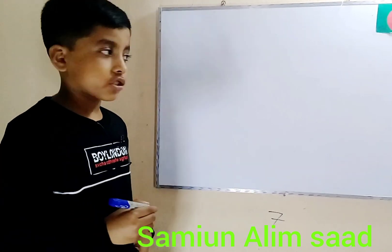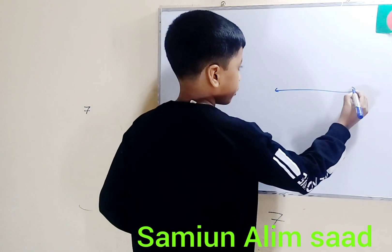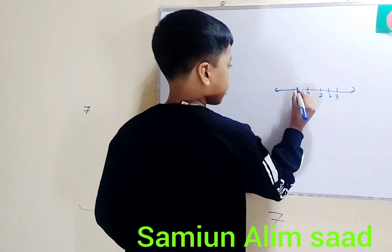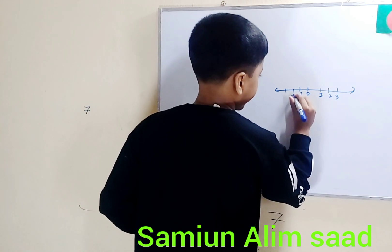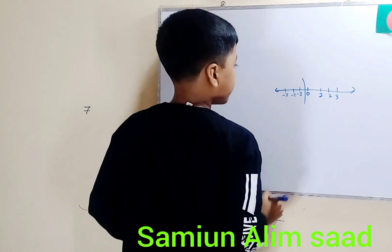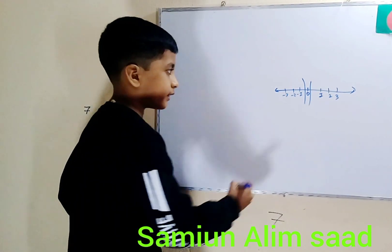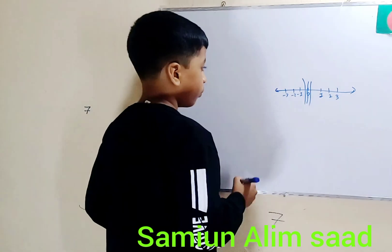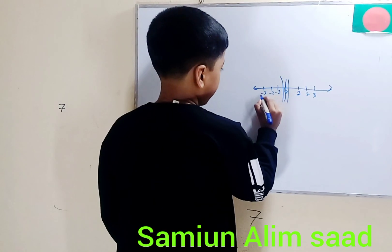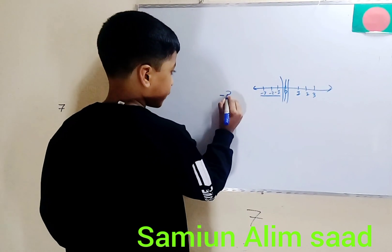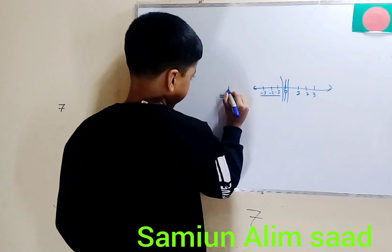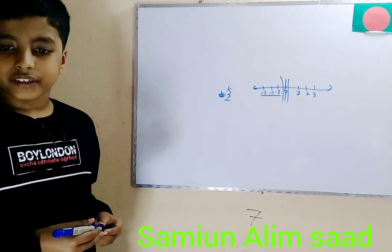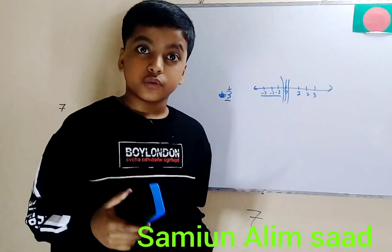First, a quick introduction to negative numbers. Here's a number line: it doesn't just start from zero — it goes zero, one, two, three in one direction, but there are numbers behind zero too: negative one, negative two, negative three. Those are negative numbers. Zero is like the boundary between negative and positive numbers.